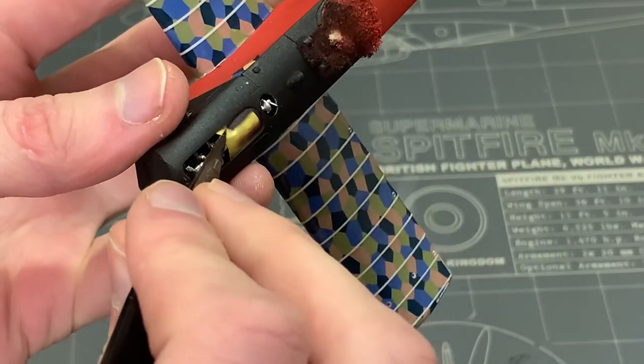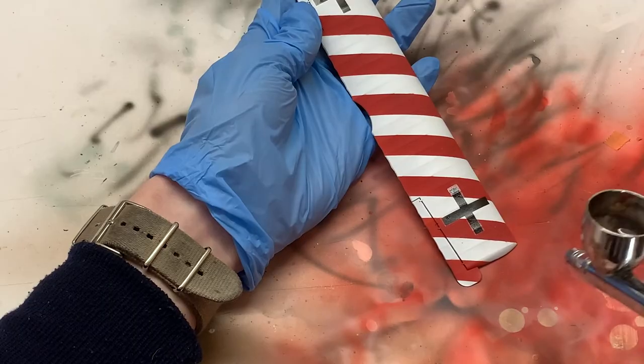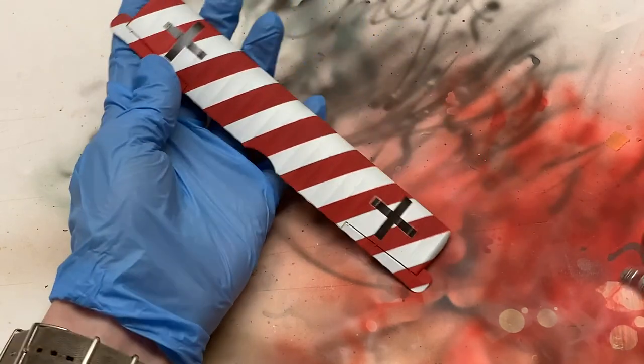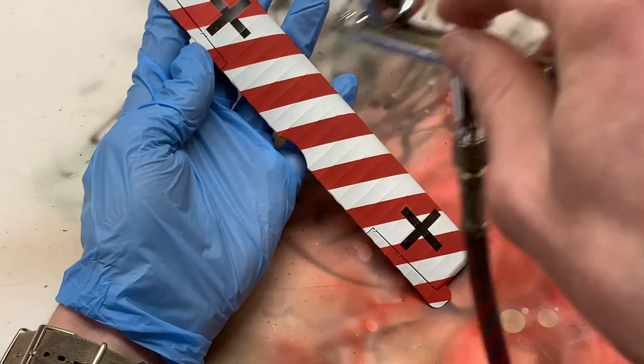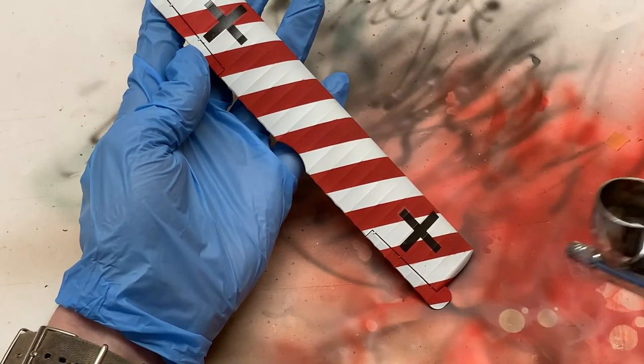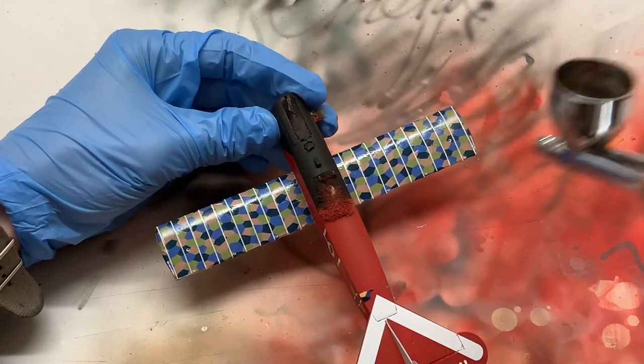Then I removed the masking tape off of the engine because we don't need to mask anymore, there's no more color being sprayed. I covered everything with a few coats of clear varnish to seal the decals and prepare the surface for washes and oils which will be coming next episode.